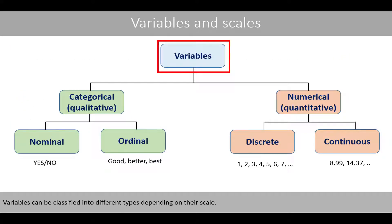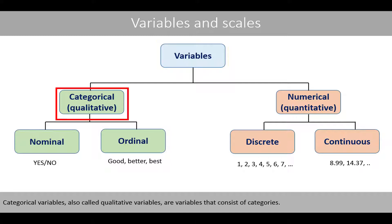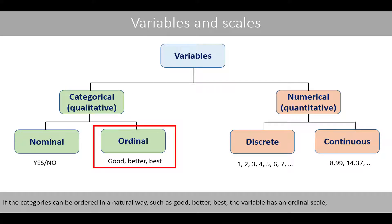Variables can be classified into different types depending on the scale. Categorical variables, also called qualitative variables, are variables that consist of categories. If the categories can be ordered in a natural way, such as good, bad, or best, the variable has an ordinal scale.